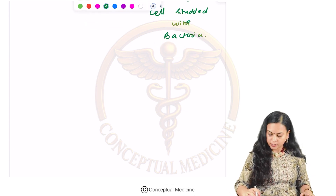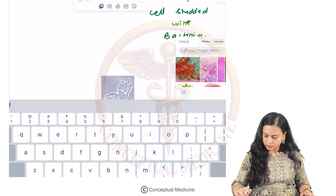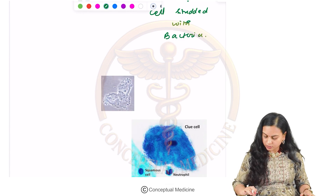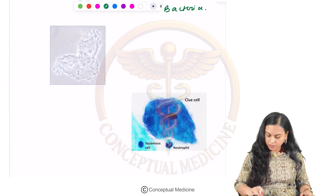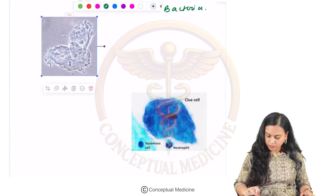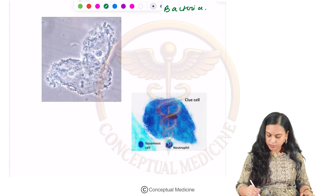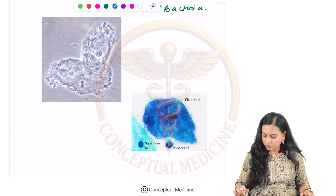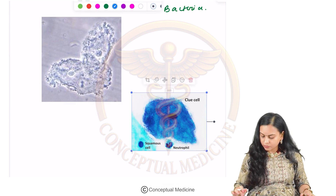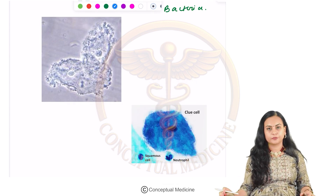So let me show a clue cell. This is a clue cell — this is how you will see it in microscopy. This is an epithelial cell and all these dots are bacteria. This is again a clue cell, a stained clue cell.